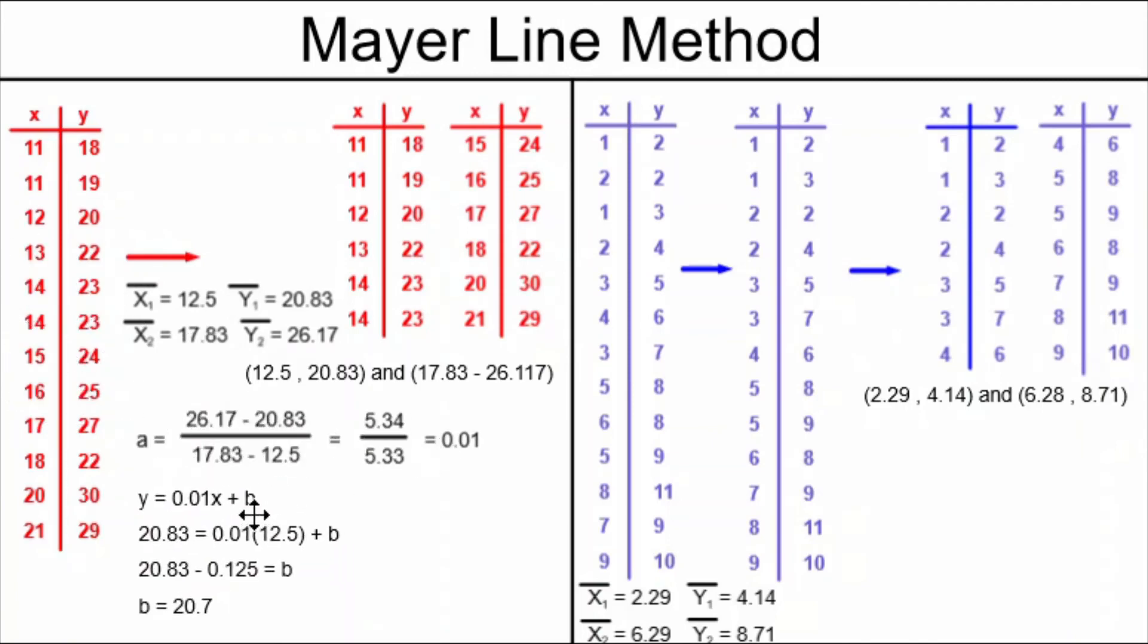So we know our equation will be 0.01x plus b. We have to find b. We take one of the points—I happen to have used the point on the right side of the slope formula—and plug it in to solve for b. And that tells us our final answer: the equation y equals 0.01x plus 20.7.